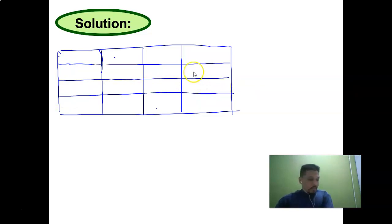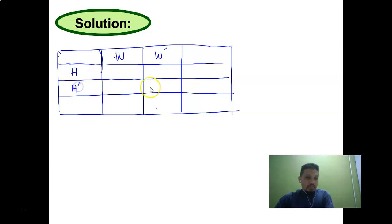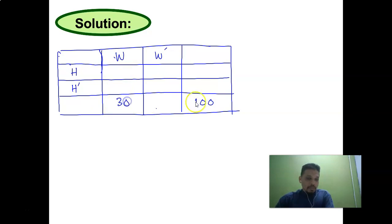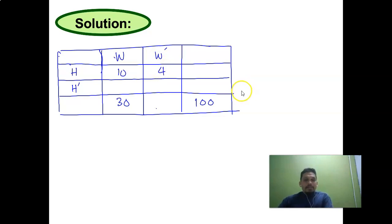We divide the table into overweight W and not overweight W-complement, and high blood pressure H and not high blood pressure H-complement. According to the question: total professors is 100, 30 are overweight, 10 of the 30 overweight have high blood pressure, and 4 professors who were not overweight had high blood pressure.